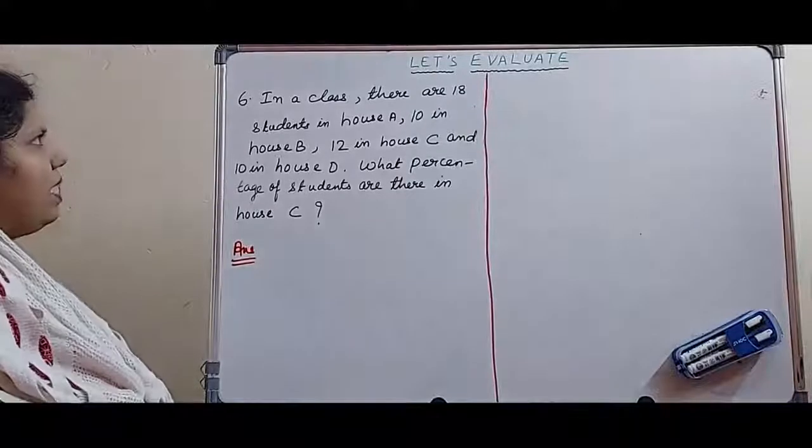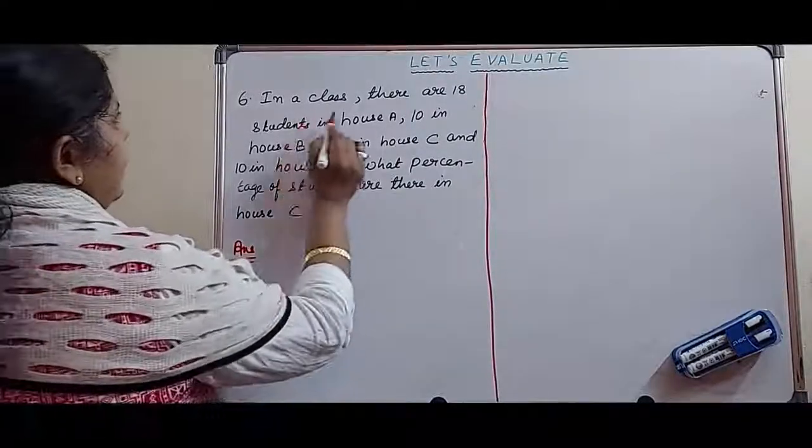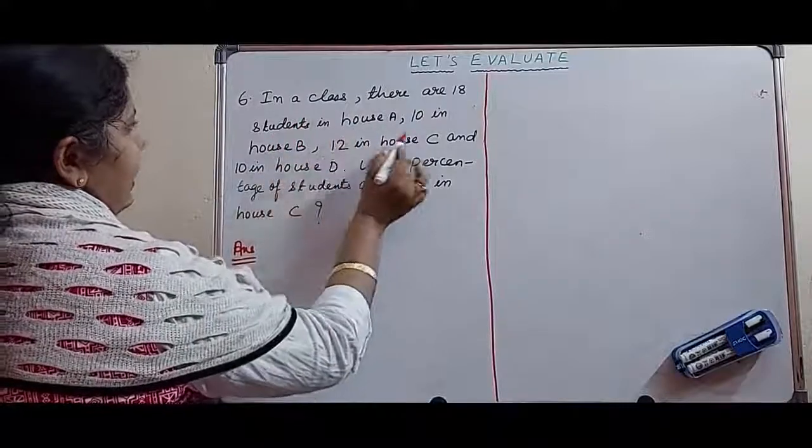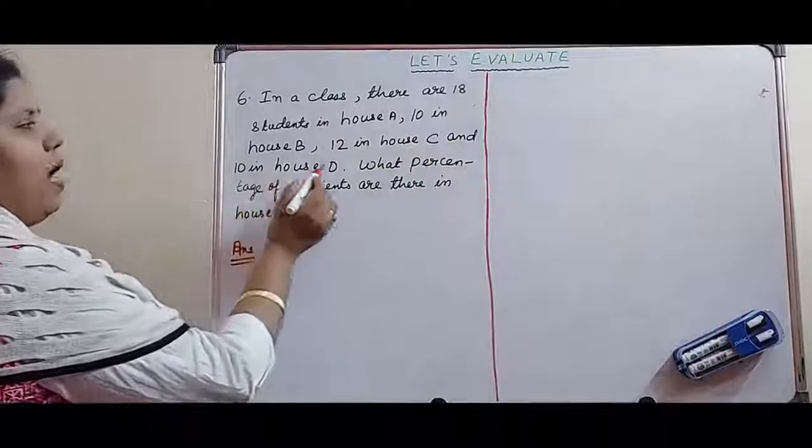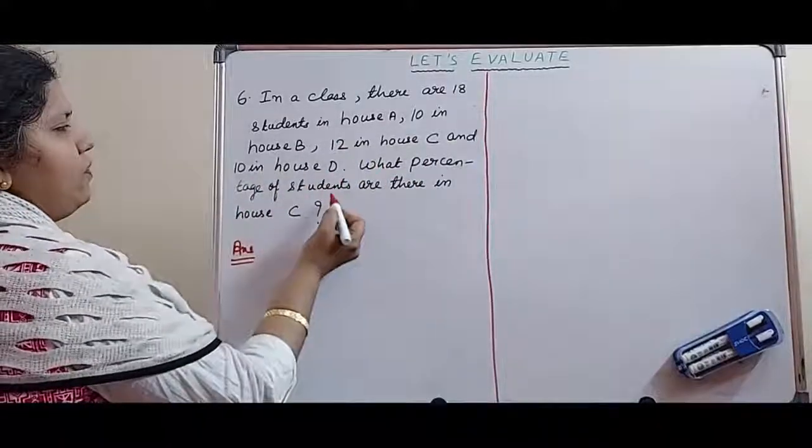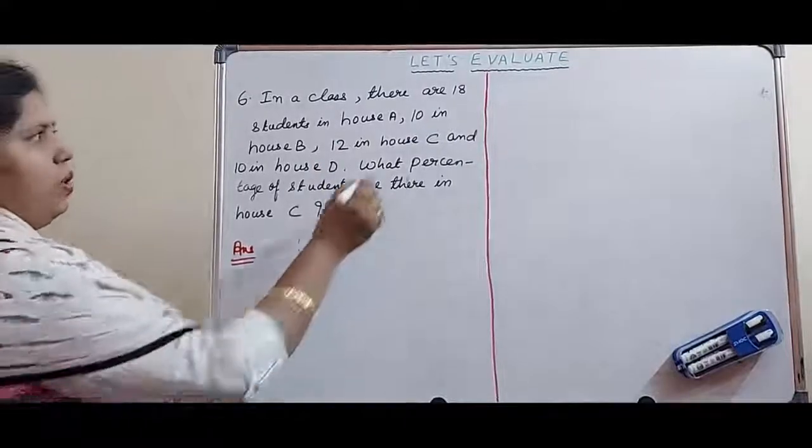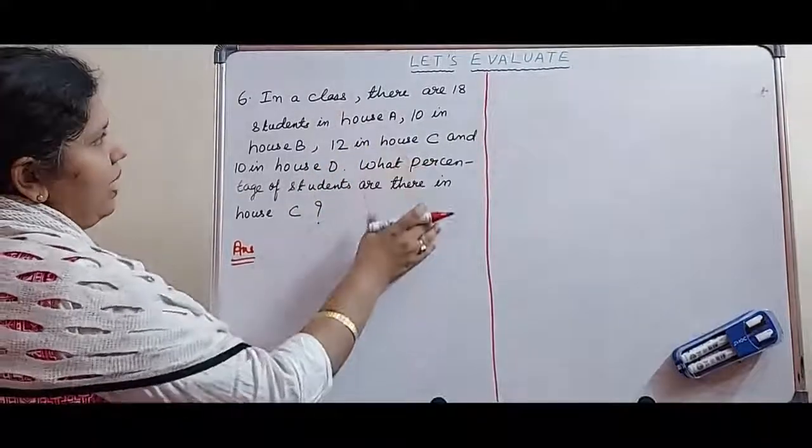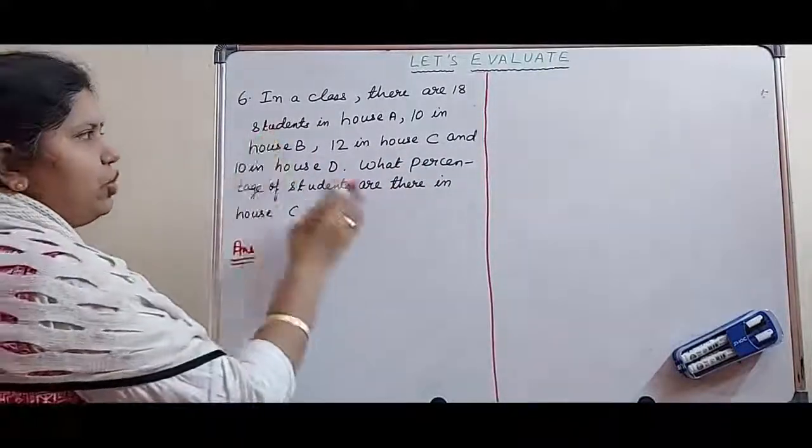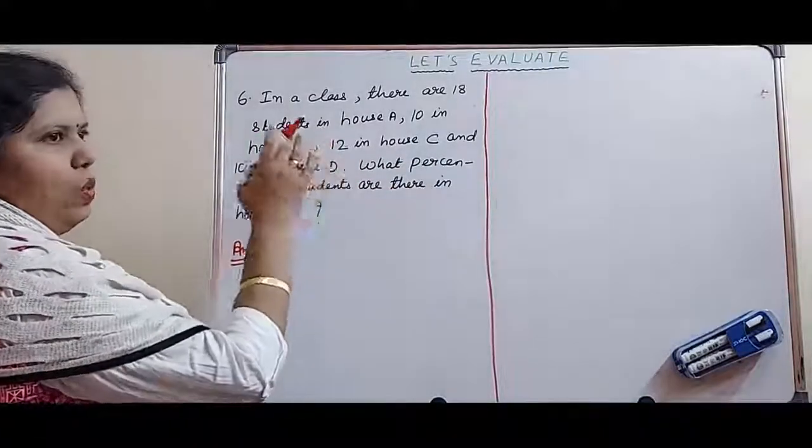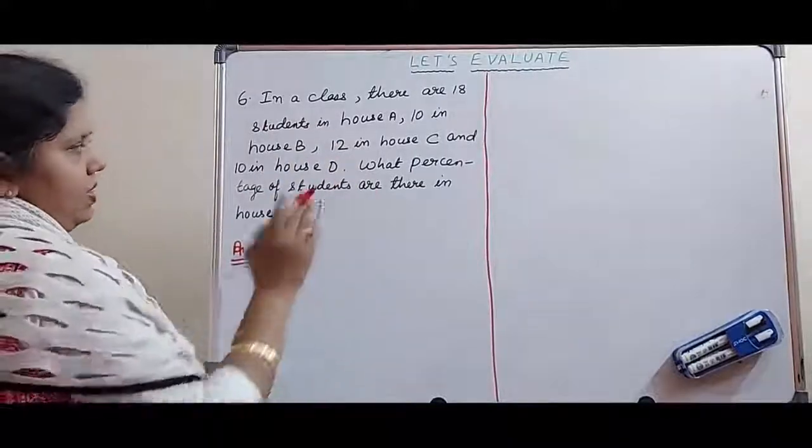Let us now start question number 6. In a class there are 18 students in house A, 10 in house B, 12 in house C, and 10 in house D. What percentage of students are there in house C? First we have to find out the total number of students in all the houses. Then we have to find out the fraction of students that are present only in house C, and then convert the fraction into percentage.